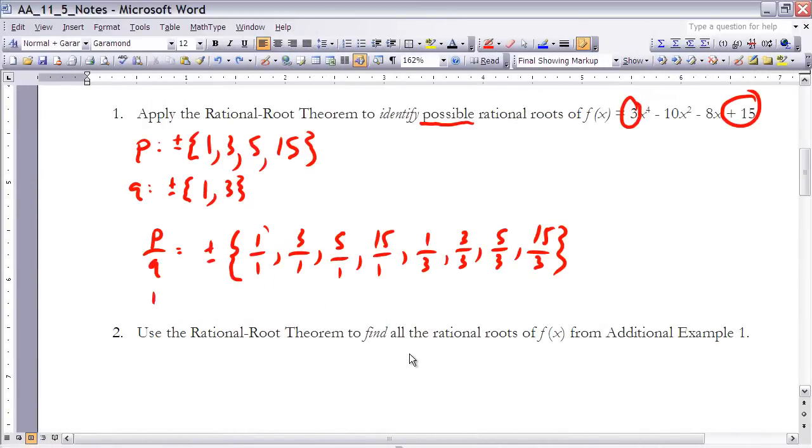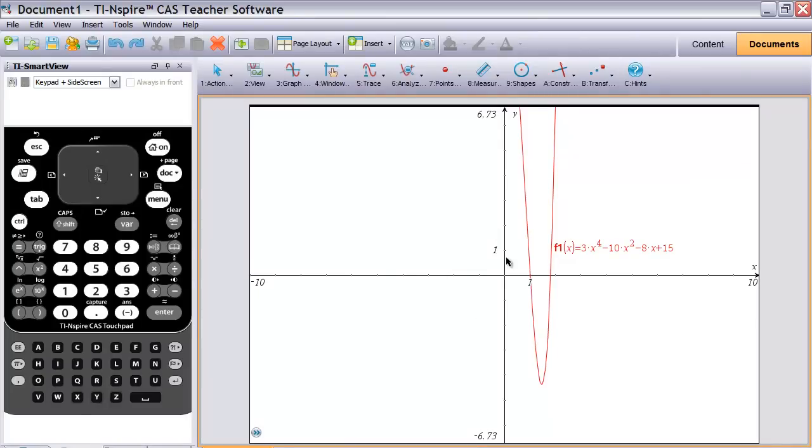So now we have our list of possible rational zeros from example 1. What I want to do in example 2 is find the actual ones. What I'm going to do to do that is I'm going to graph the function and find where it intersects the x-axis. And then check to see which of those intersection points are on this list. Those would represent my actual rational zeros. I've graphed the function on my graphing calculator. So I need to find what these zero values are.